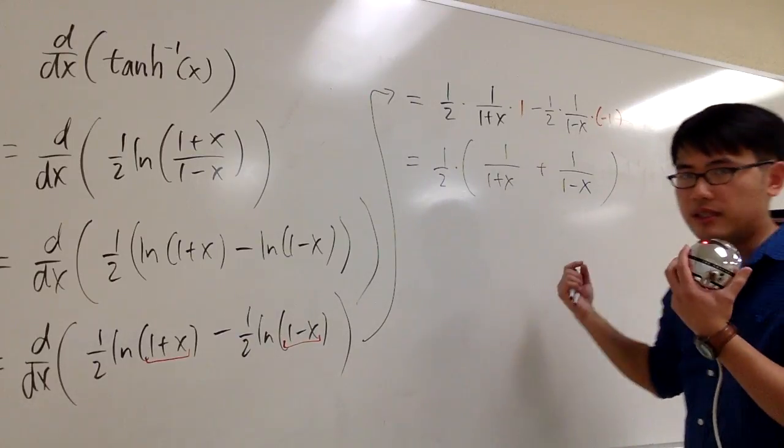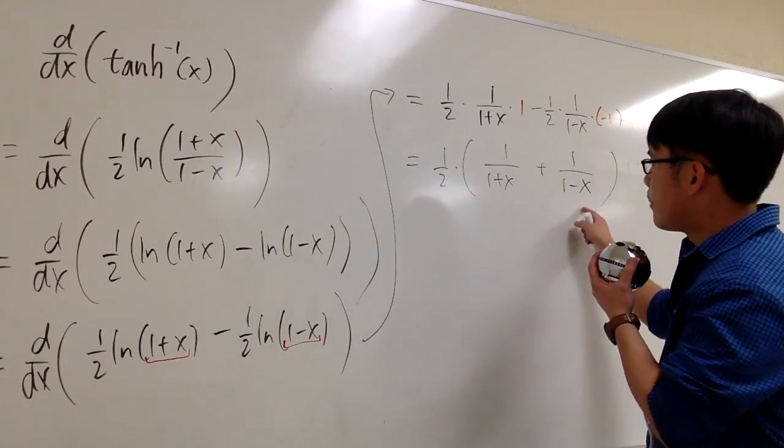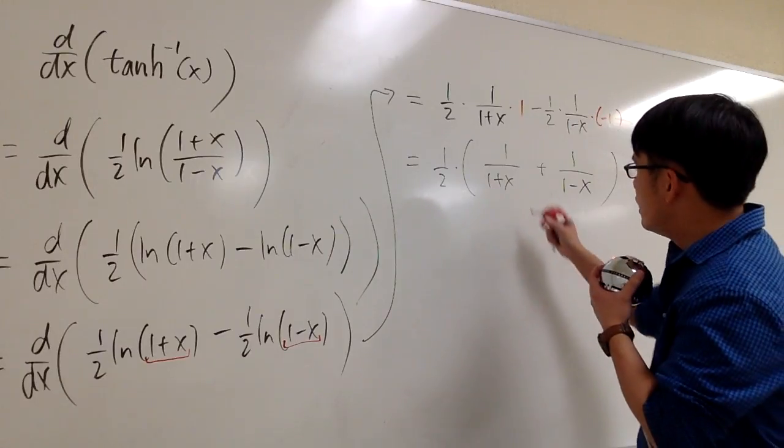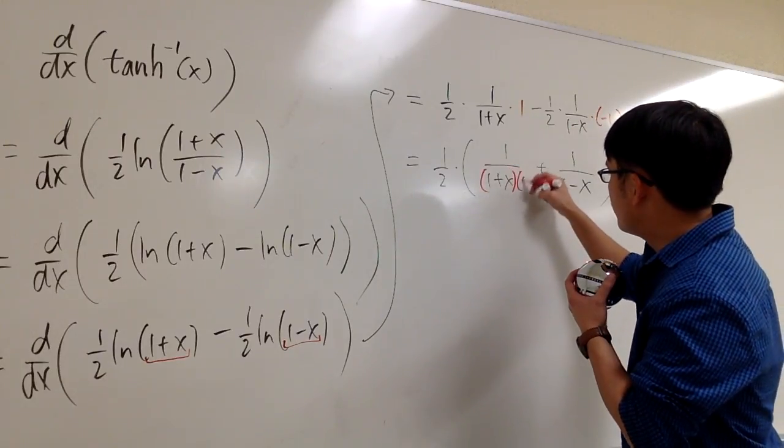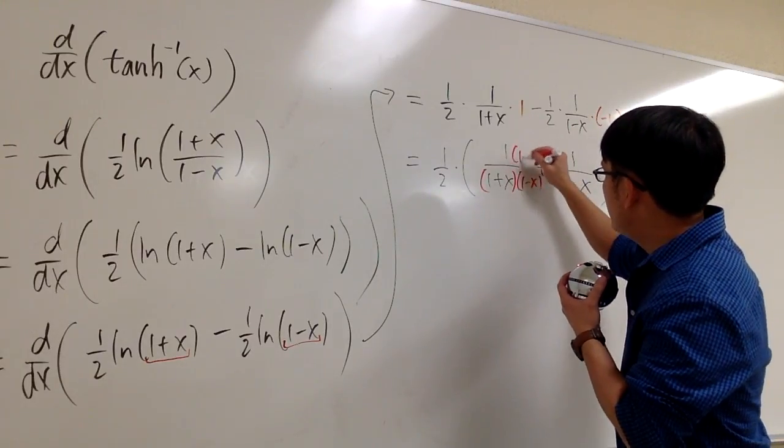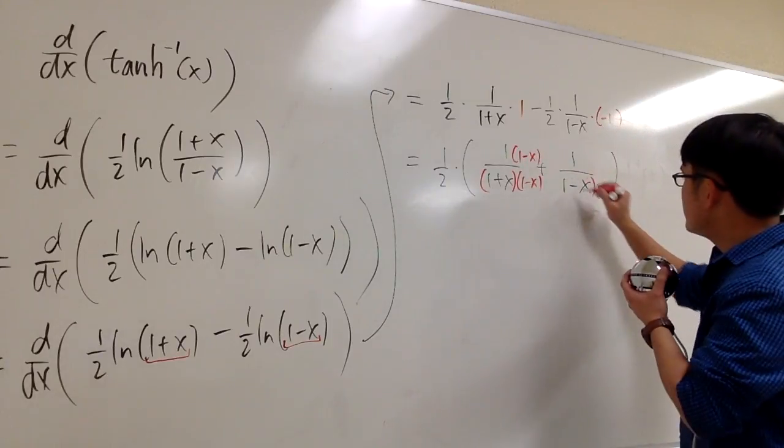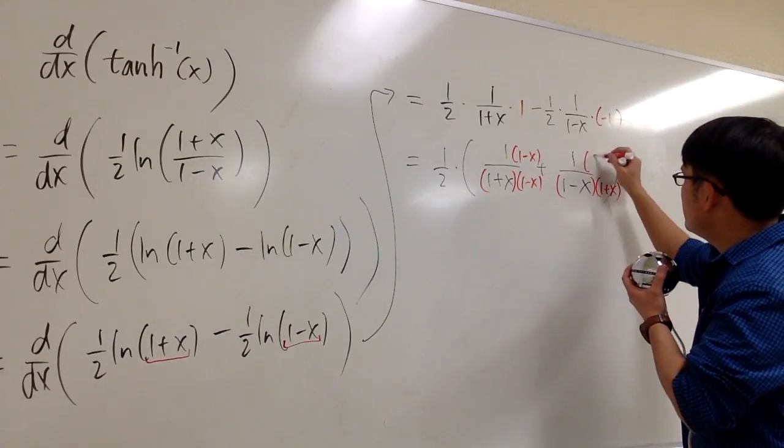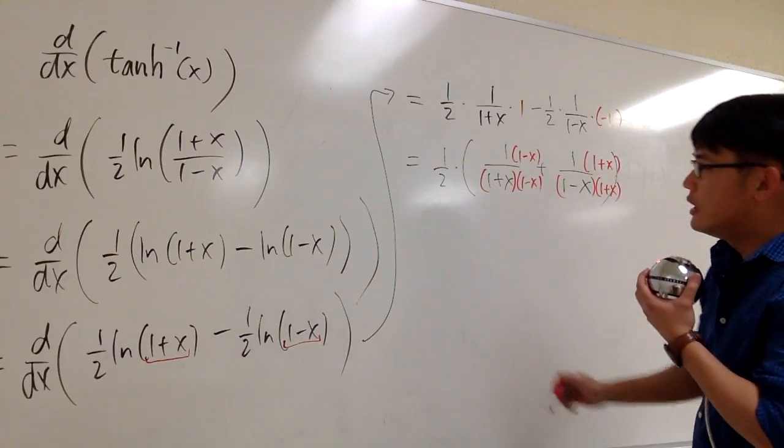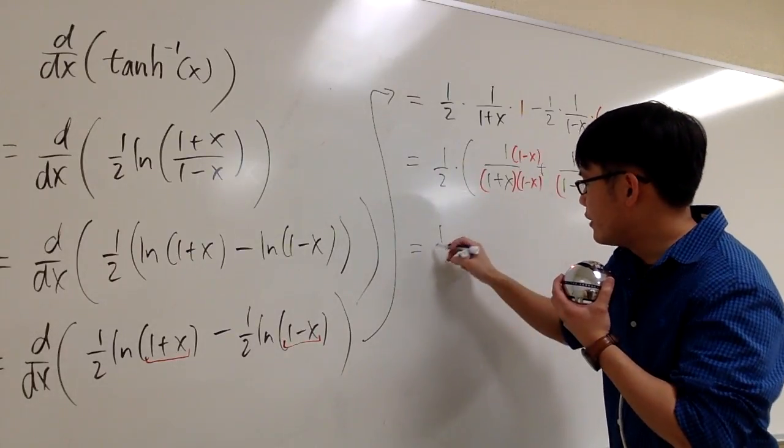Can we make this simpler? Yes, we can. Let's get the common denominators combined fractions. The first fraction, I will need to have 1 minus x bottom and the top. For the second fraction, I will need to have 1 plus x bottom and the top.